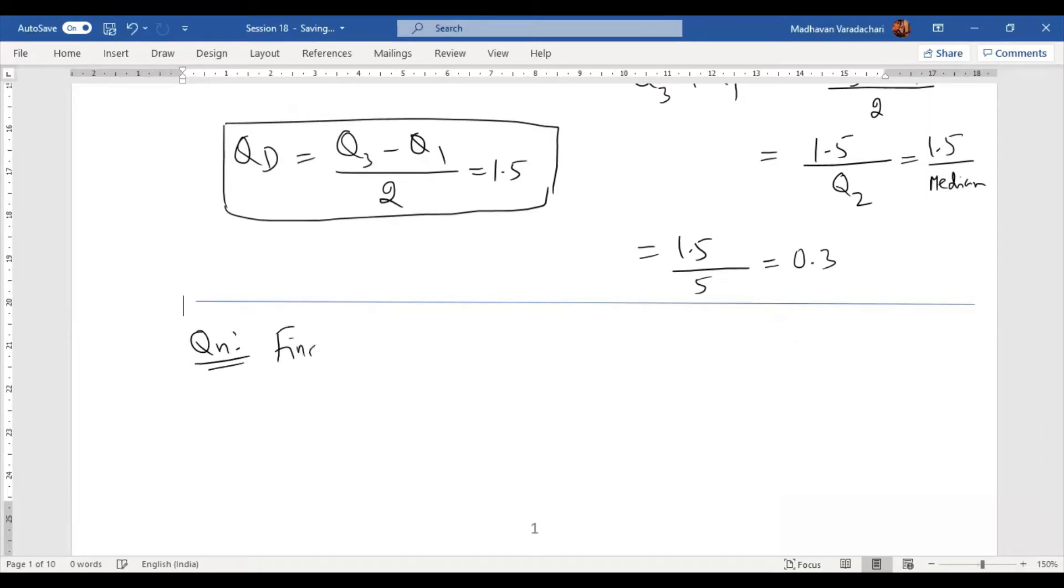Find the coefficient of mean deviation about mean, where x̄ is the mean for the first nine natural numbers.